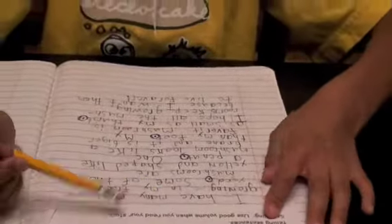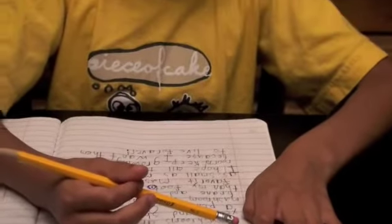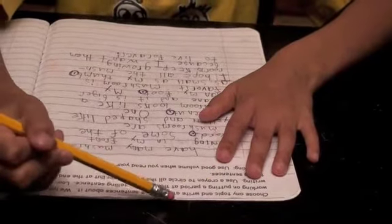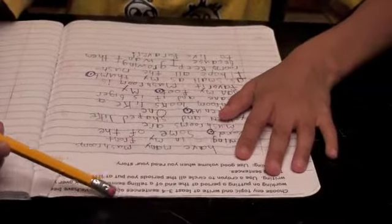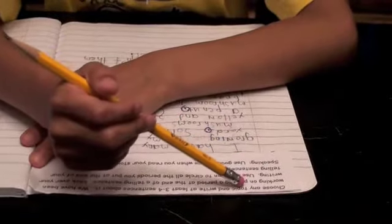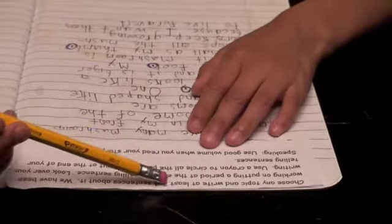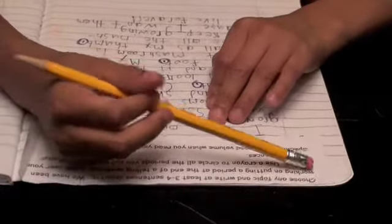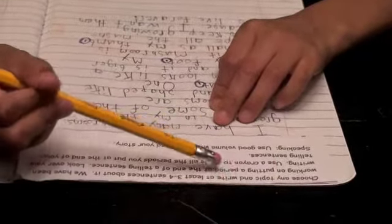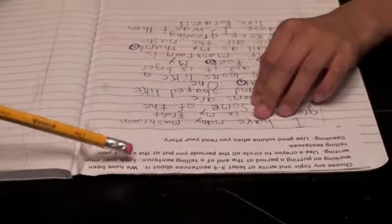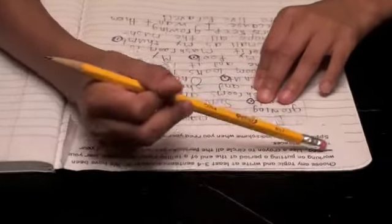I have many mushrooms. Wait a minute. Can you read what the directions were first? I'm sorry. Choose any topic and write at least three or four sentences about it. We have been working on putting a period at the end of a telling sentence. Look over your writing. Use a crayon to circle all the periods you put at the end of your telling sentence.